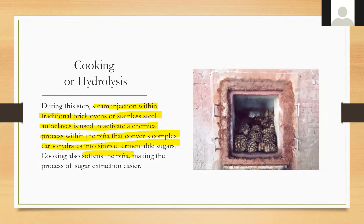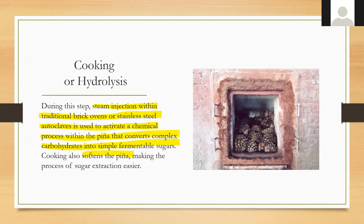The next stage is hydrolysis — cooking. During this step, producers may use traditional brick ovens, steam injection (a newer method that some consider improper), or stainless steel autoclaves. This activates a chemical process within the piña that converts complex carbohydrates into simple fermentable sugars, and softens the piña to make the sugar extraction process much easier.